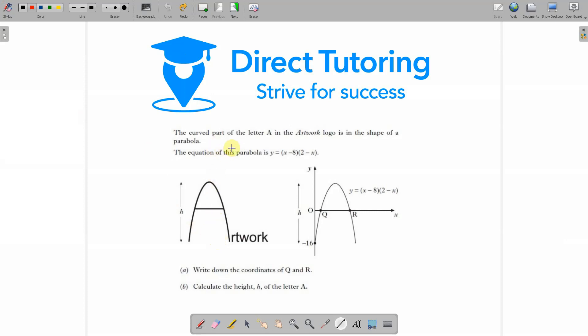So if we have a look at this question here, past exam paper question, it gives us the capital letter A and it gives us a height, but it's also in the shape of a parabola with this equation. And it's asking us to write down the coordinates of Q and R.